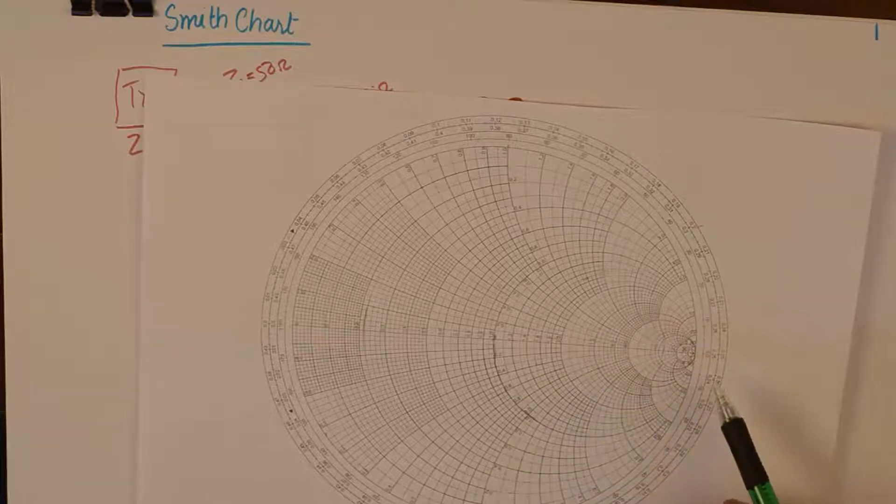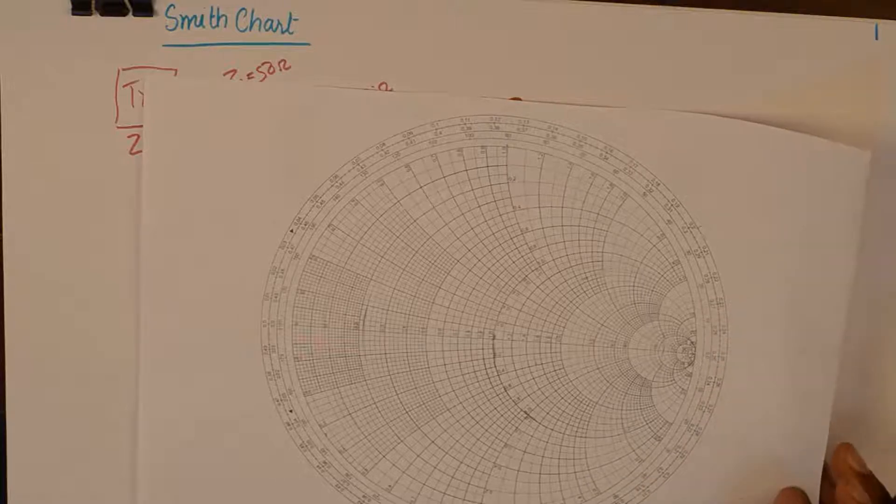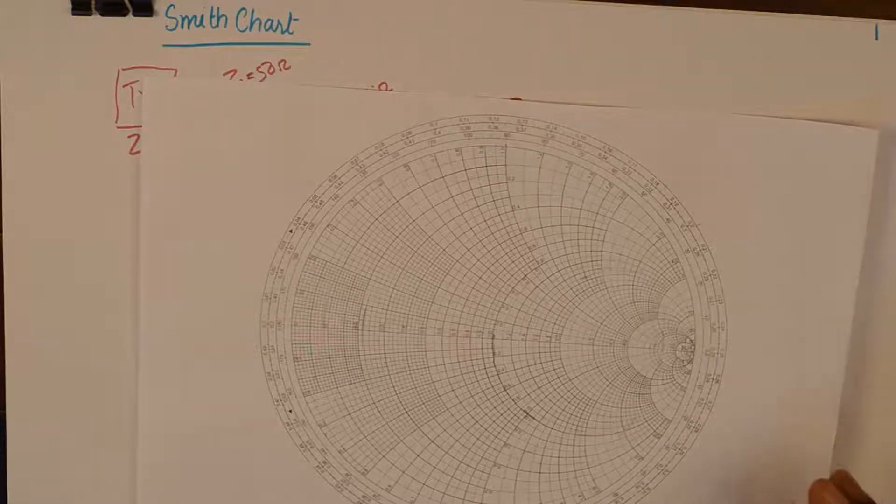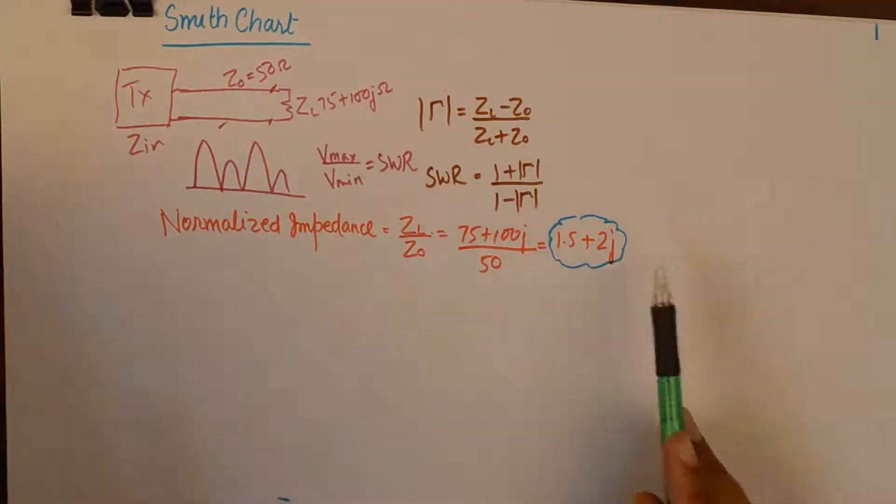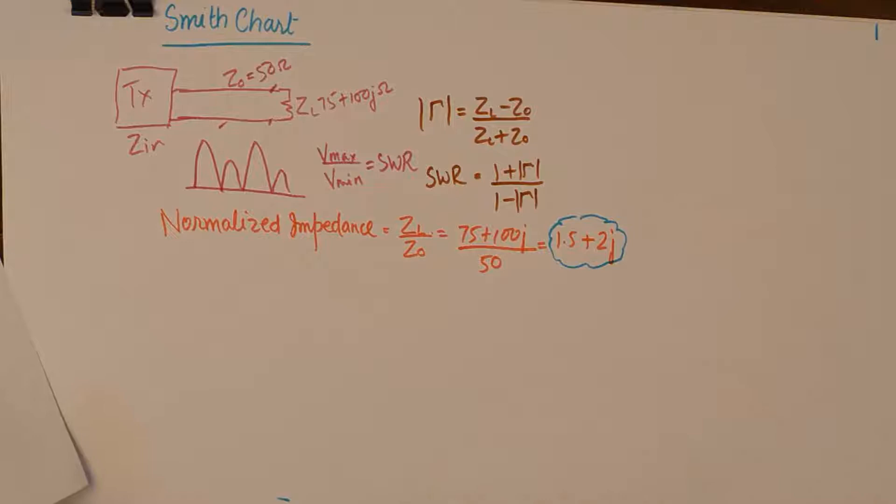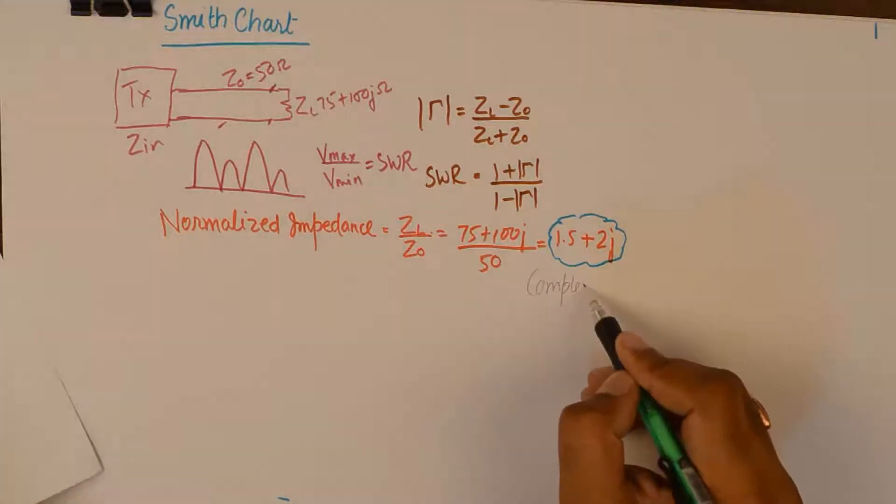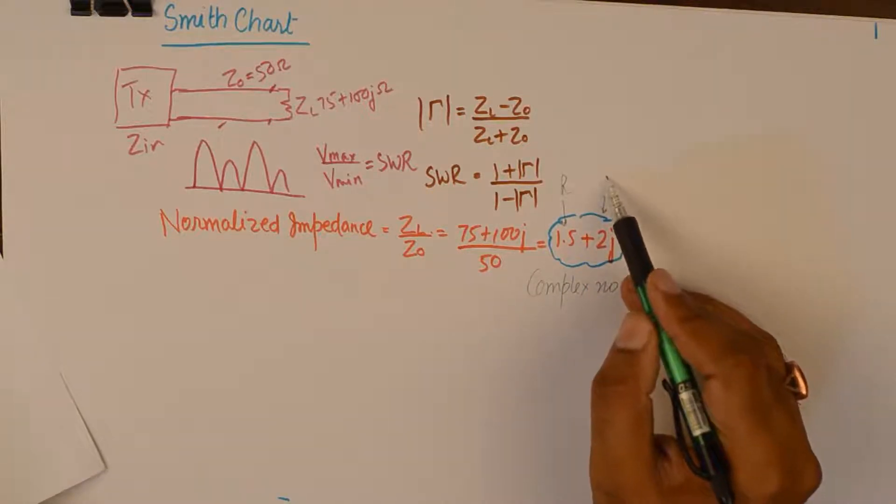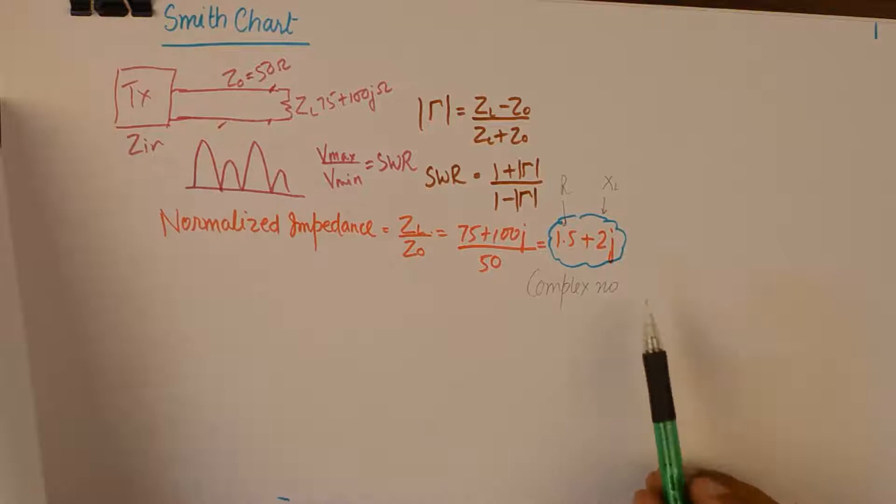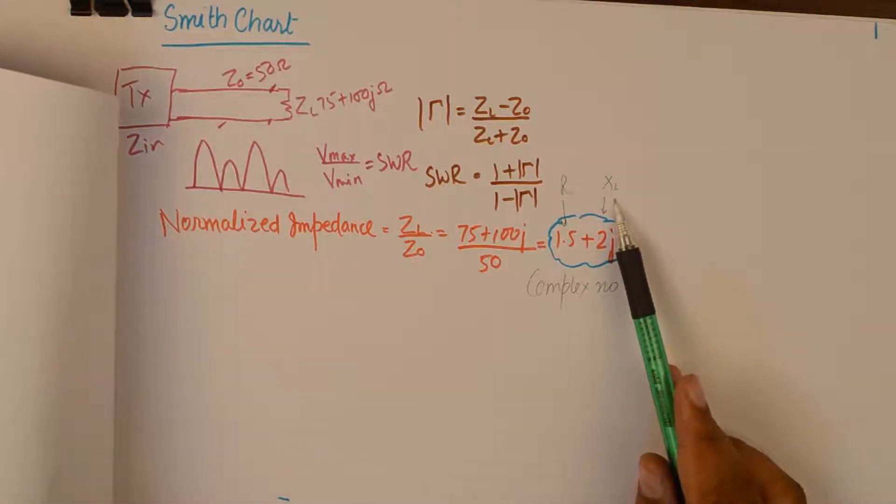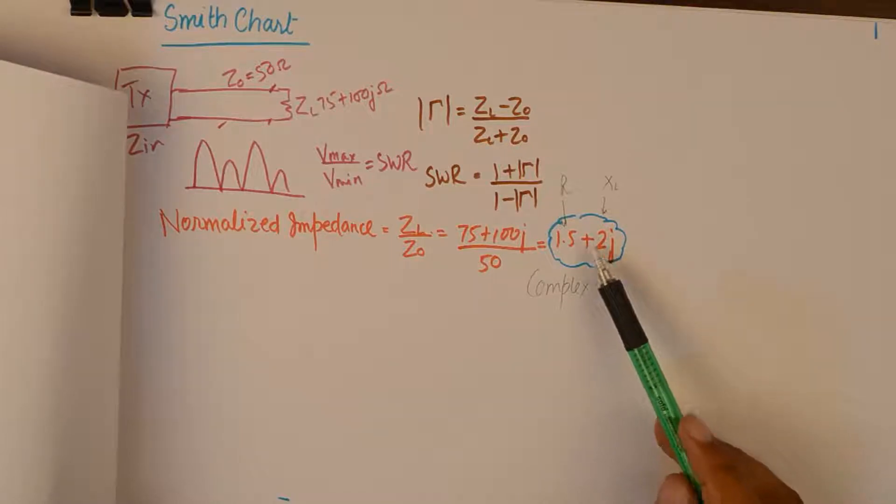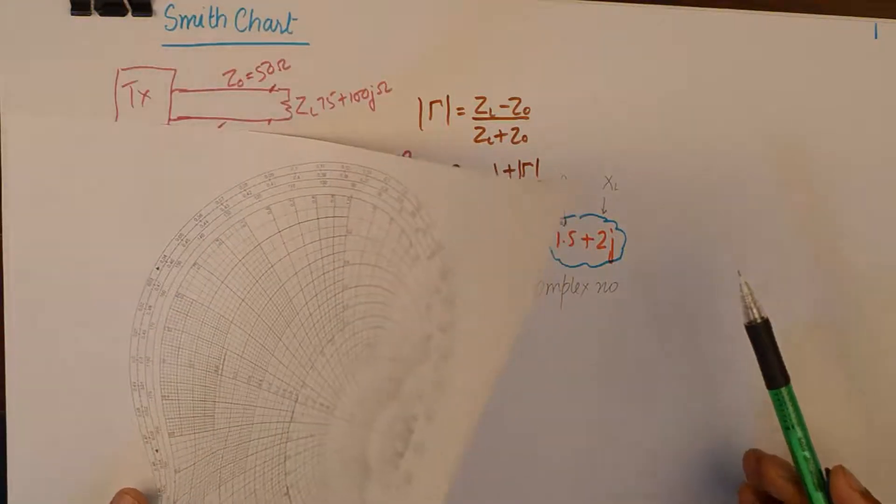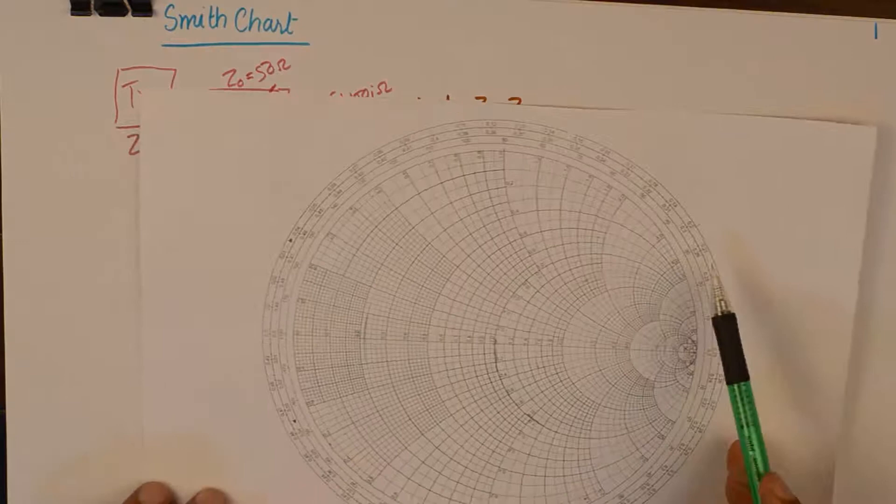The straight line right in the center represents the resistance part of the impedance. Please understand impedance or the normalized impedance will be a complex number. So, it has two parts, resistive and inductive or capacitive which is reactive. Now, because we have a plus sign here, I will assume that this is inductive reactance.